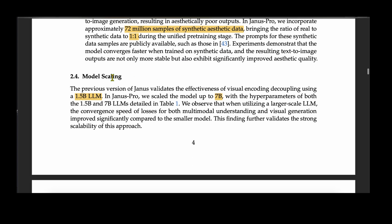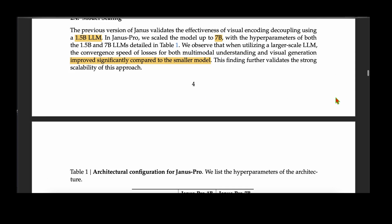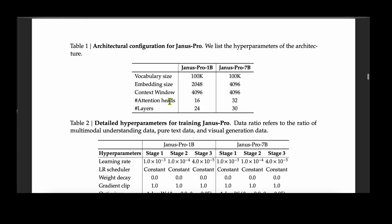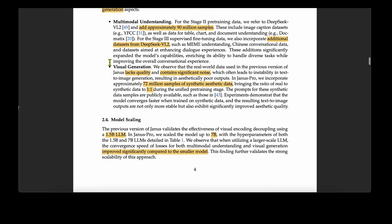They also scaled up the model. The original Janus used a 1.5B LLM, but Janus Pro scales up to 7 billion parameters. Using a larger LLM, the convergence speed of losses for both multimodal understanding and visual generation improved significantly compared to smaller models. Architecturally, the 1B model has an embedding size of 2048 and 24 layers, while the 7B model has an embedding size of 4096, more attention heads, and 30 layers.